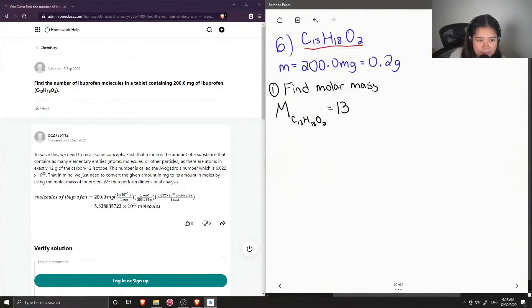And we want to multiply by however many atoms are in the compound. So in the case of carbon, there are 13 carbon atoms. So we're going to multiply 13 by the molar mass of carbon, plus 18 times the molar mass of hydrogen, plus 2 times the molar mass of oxygen.